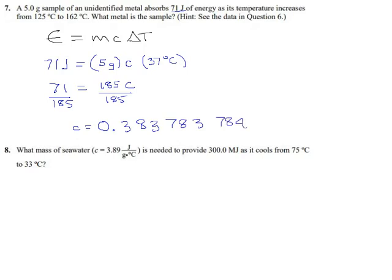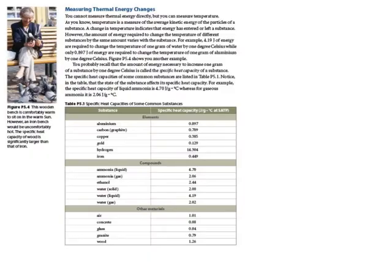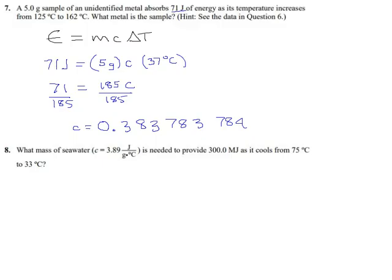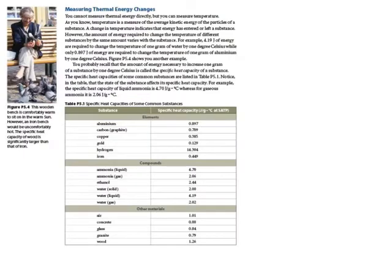And we get that c is 71 divided by 185 equals 0.383783784. Okay, not a gorgeous number, but good enough. And if I had to do this to three decimal places, it would be 0.384. Let's see if there's only one metal with 0.384.